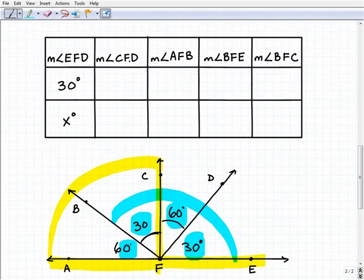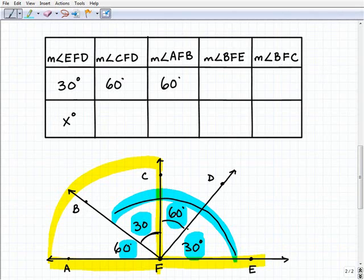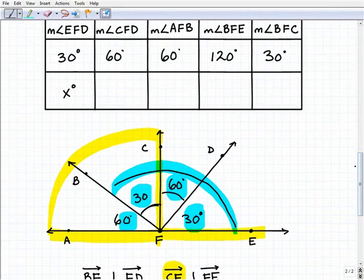Let's go ahead and fill in our chart so we don't mix things up. So measure of angle CFD, that was 60 degrees. The measure of AFB is also 60 degrees. The measure of BFE, you've got to be careful here. We've got to reference our chart. So BFE is going to be this total sum right here. So this is going to be 90 and 30, so that will be 120. And then we have the measure of BFC, that's 30 degrees.